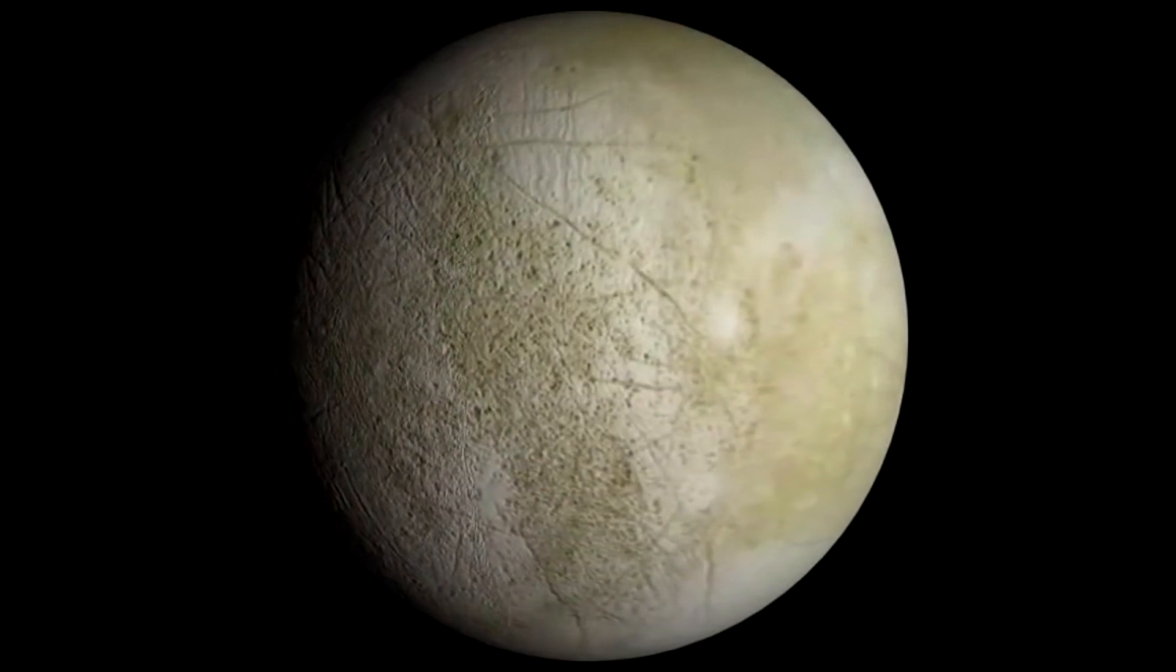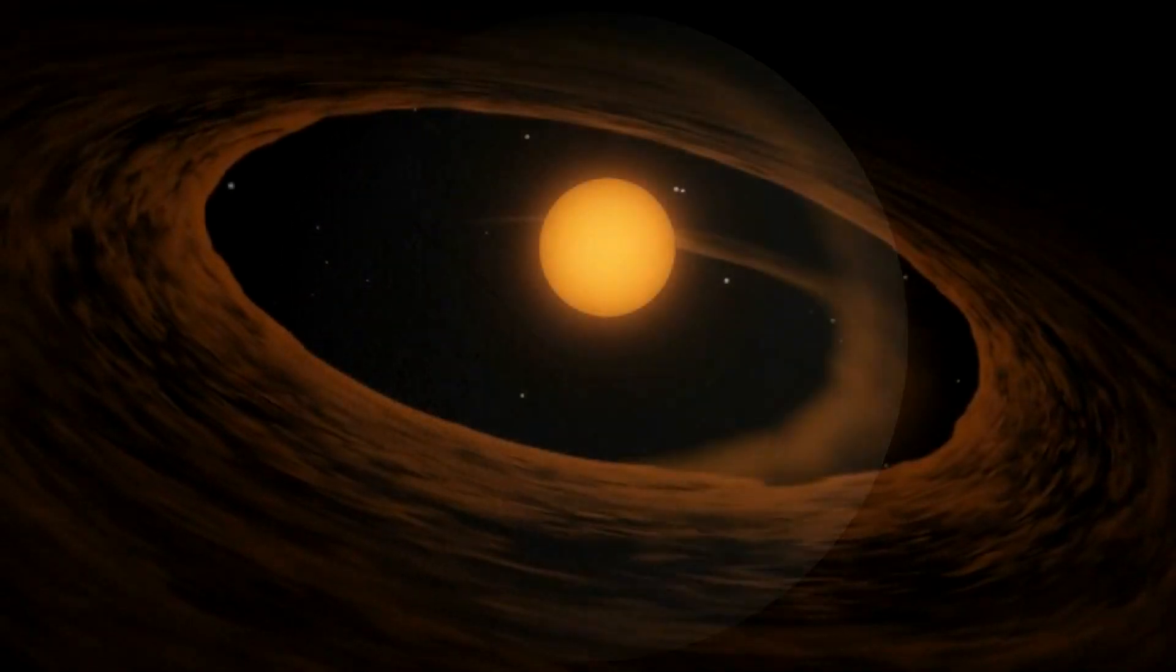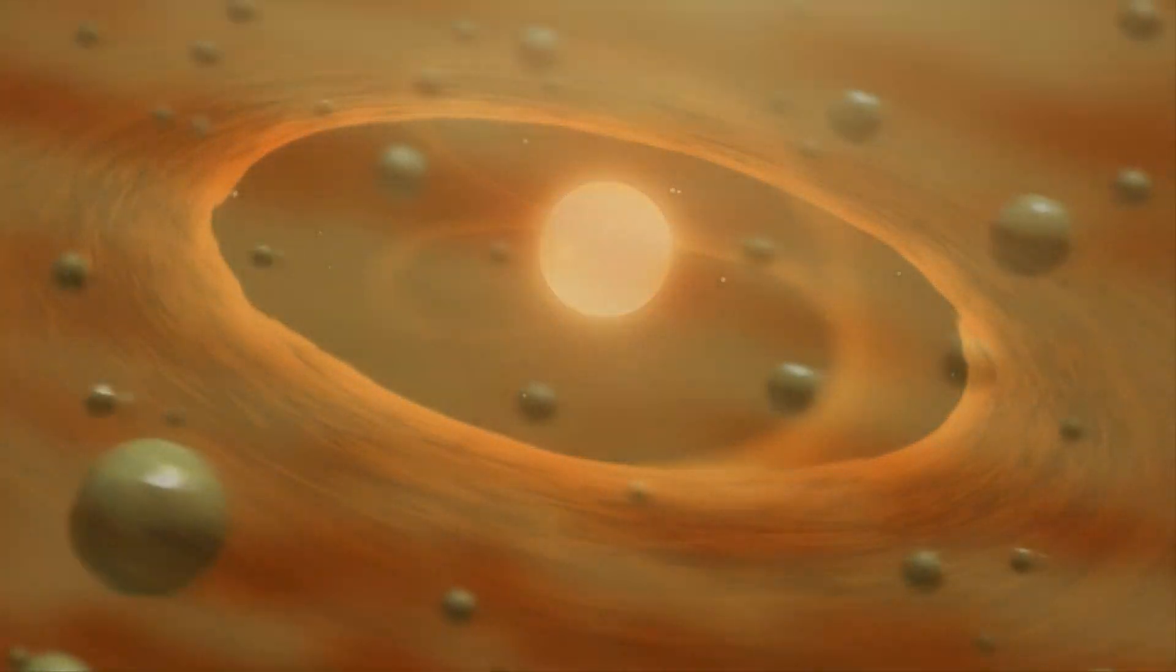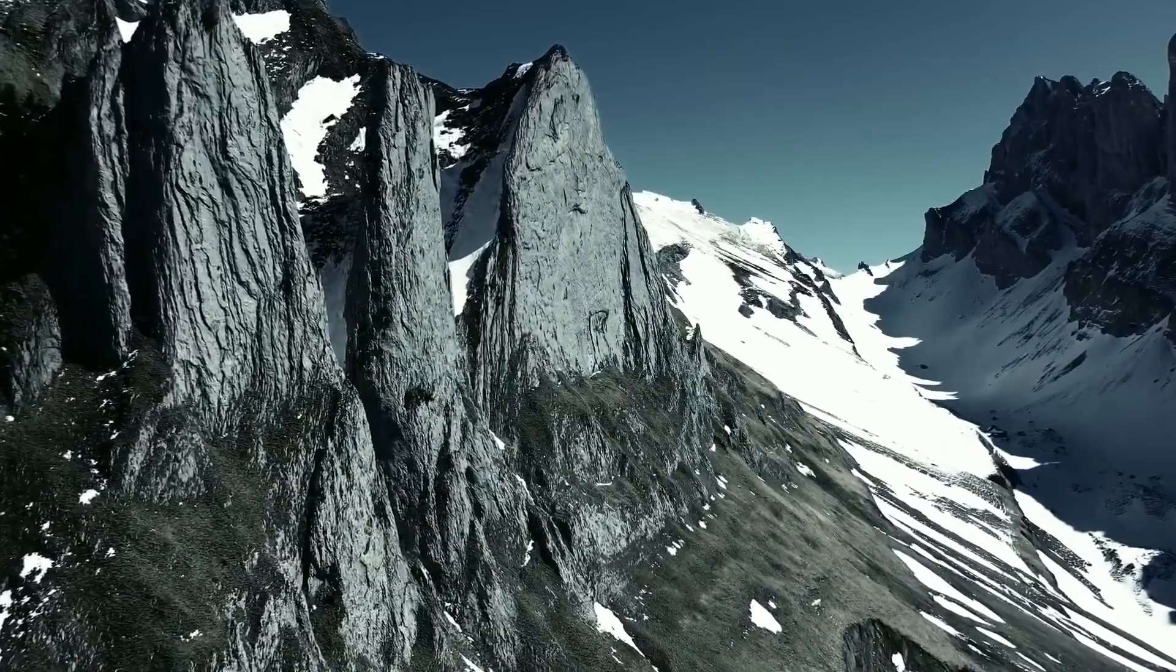Yet the mass of Europa is greater than all known satellites in the solar system that are inferior in size combined. Its average density is very low, and this points to the fact that it consists mainly of silicate rocks and thus is similar in composition to the terrestrial planets.